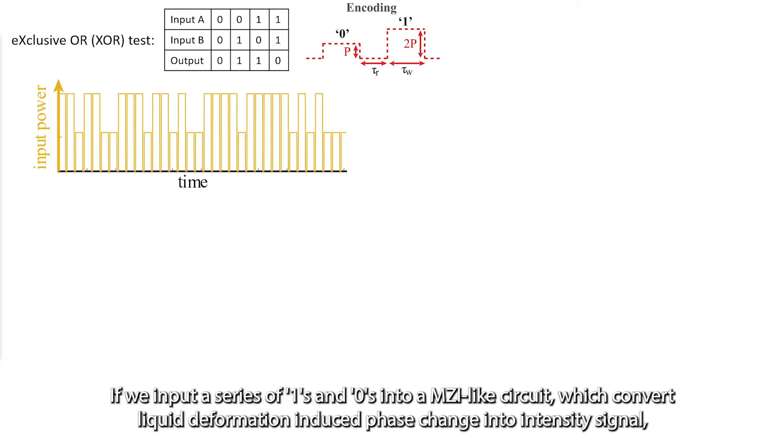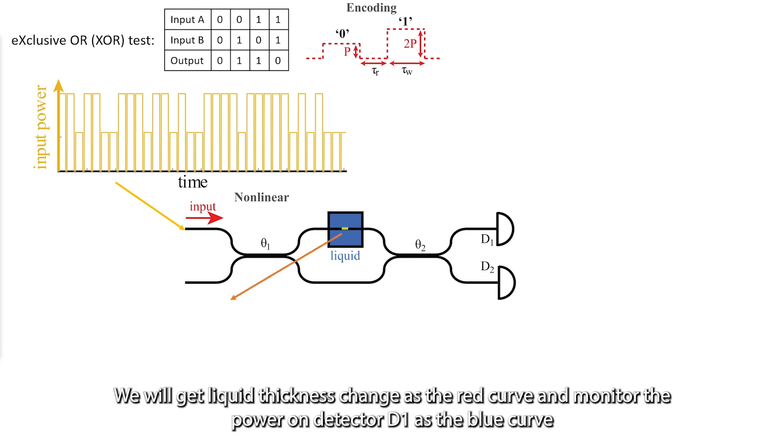If we input a series of 1s and 0s into an MZI-like structure like this, which converts liquid deformation-induced phase change into intensity signal, we will get liquid thickness change as the red curve and monitor the power on detector D1 as the blue curve.